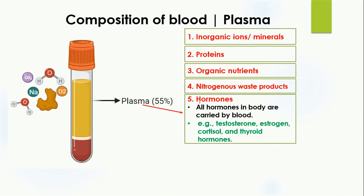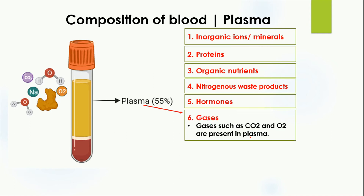The fifth component of plasma is hormones. All hormones in the body are carried by the blood. These include testosterone, estrogen, cortisol, and thyroid hormones, which are all poured into the blood and transported to their different destinations.